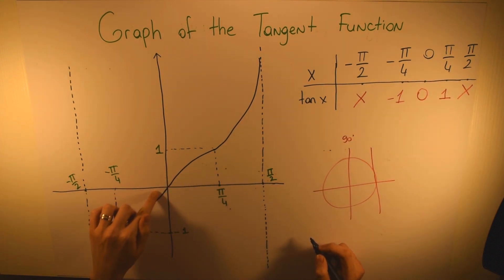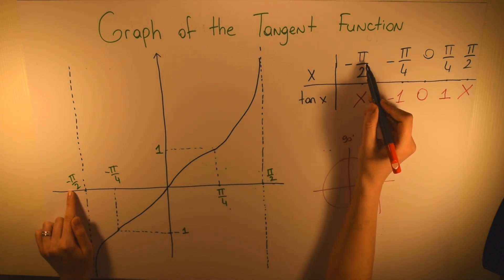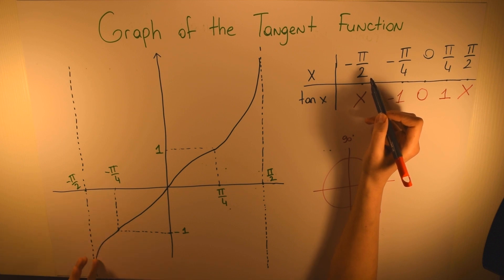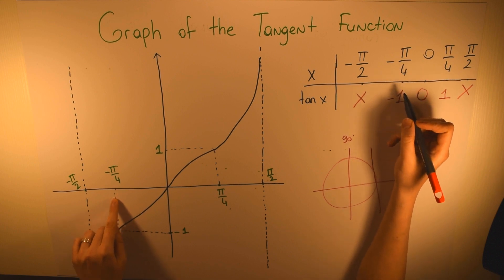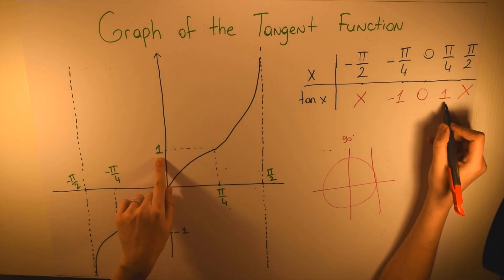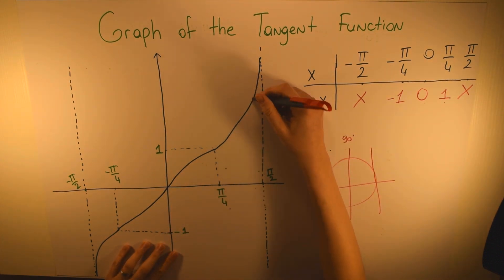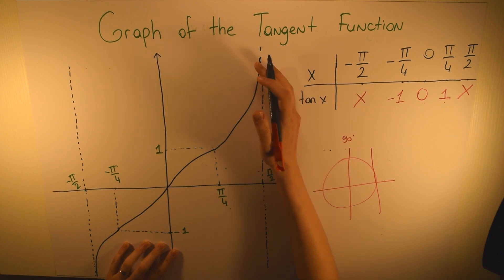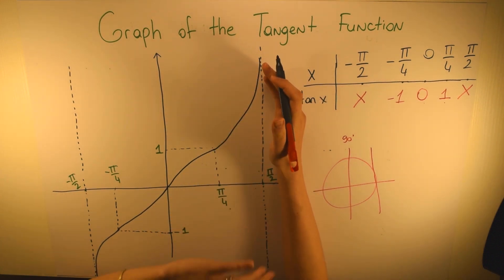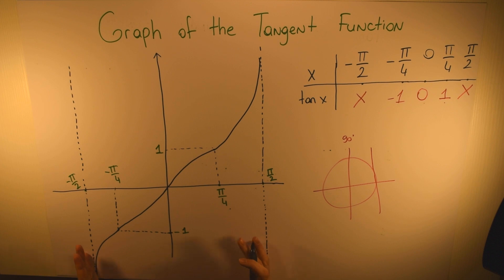When drawing the tangent graph: at minus π/2 there is no value; at minus π/4 it equals minus 1; at 0 it equals 0; at π/4 it equals 1; and at π/2 there is no value. The curve approaches but never touches the asymptote lines at ±π/2 — it goes to infinity. This is one period of the tangent function, and it repeats itself.